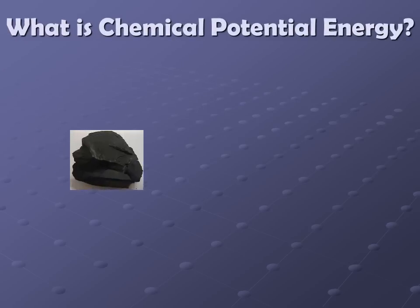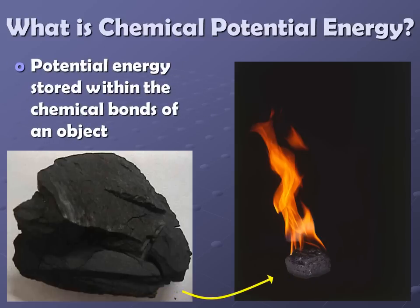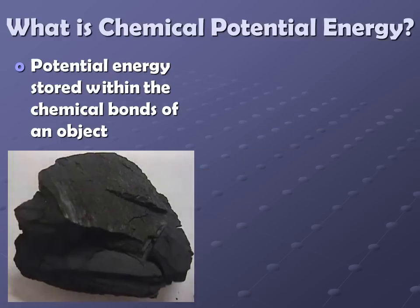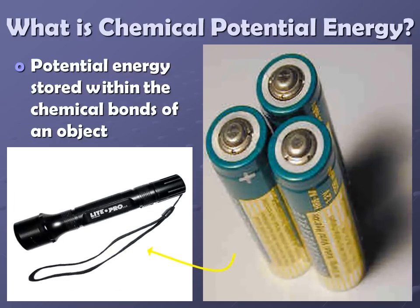For what is chemical potential energy, this could be something as simple as coal or charcoal. There's the potential to burn this and release the energy that is stored inside of it — because it has stored energy inside of it, that makes it potential energy. Another simple example would be something like batteries. Batteries that operate a flashlight have to have energy — the energy is stored inside of the batteries, and because it's stored energy, that's our key here. The stored energy tells us it's a form of potential energy.